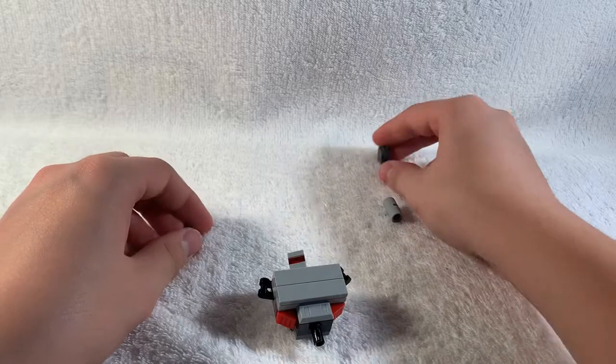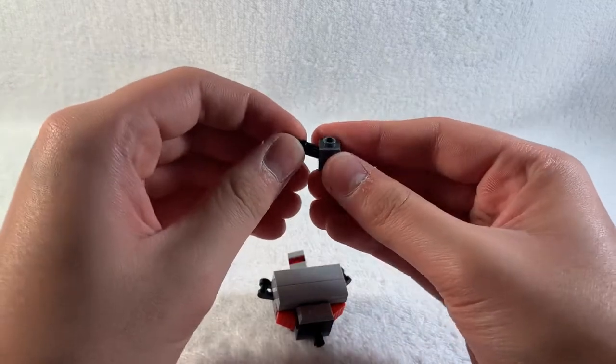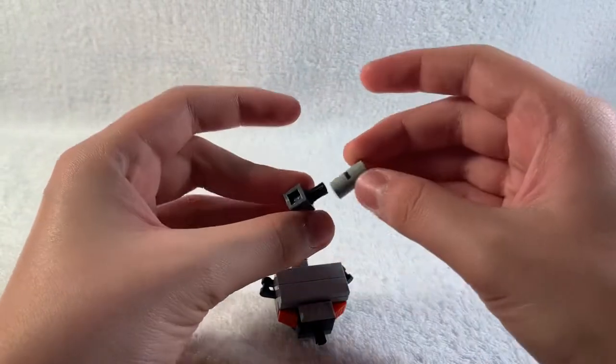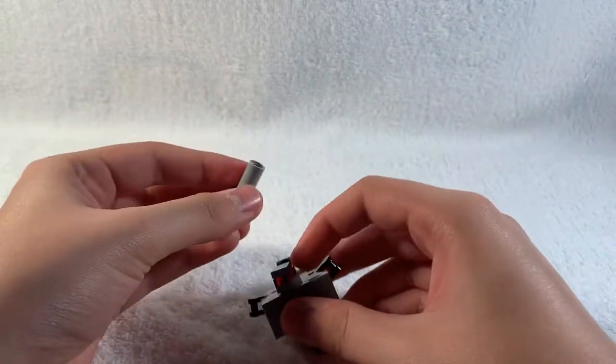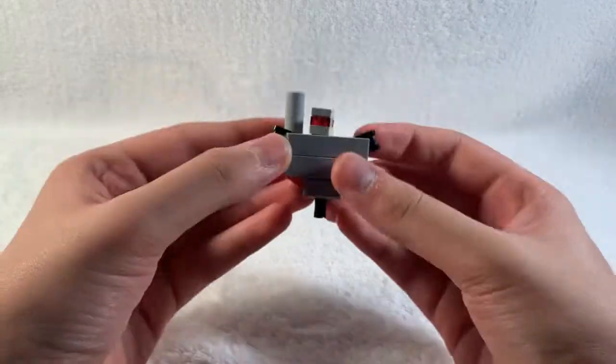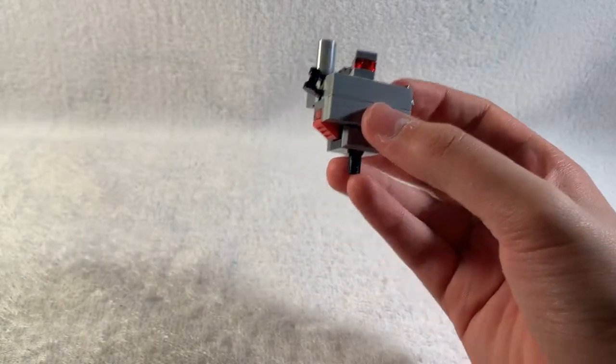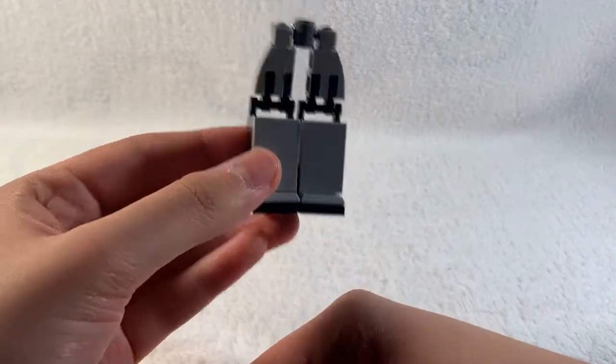And the torso. Then to build the cannon piece, you just peg that in right there. There's Megatron's torso. Let's move on to the legs.